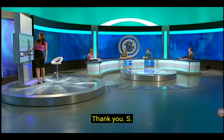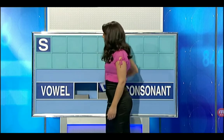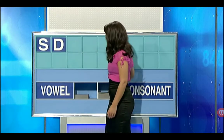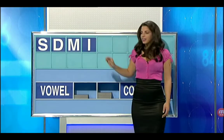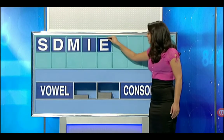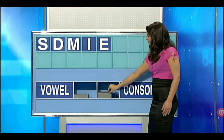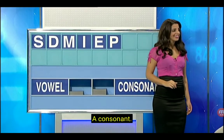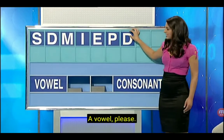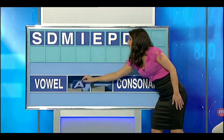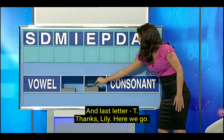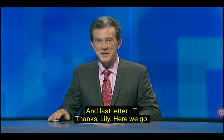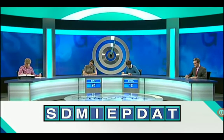We're enjoying the letters, so let's keep going. Emily, you again. Can I start with a consonant please, Lily? S. Another please — D. And another — M. A vowel now — I. Another vowel — E. A consonant please — P. A consonant — D. A vowel please — A. And a consonant, last letter — T. Thanks, Lily. Here we go.